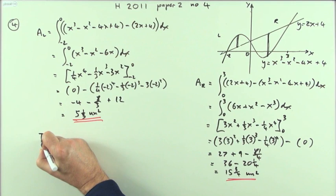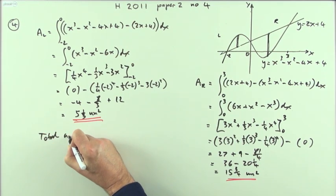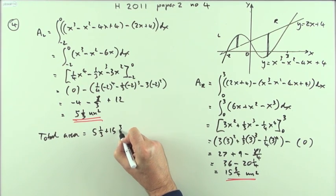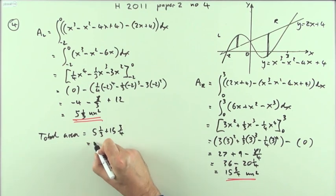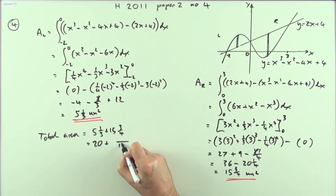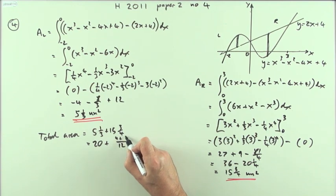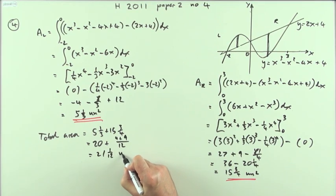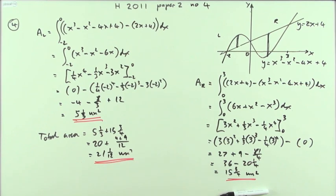The total area will be adding the two together: 5 and 1/3 and 15 and 3/4. That's 20 plus a number of twelfths. Three into twelve goes four, so that's 4, four into twelve goes three, three threes are 9. That's 13/12, so that's another whole number and 1/12 left over. The total area is 21 and 1/12 square units.